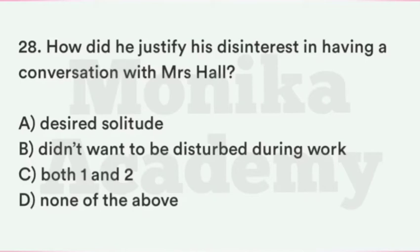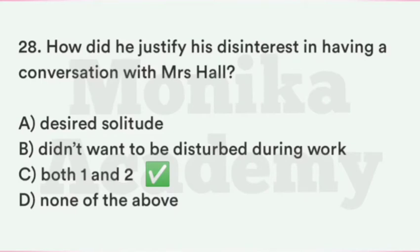Question 28: How did Griffin justify his disinterest in having a conversation with Mrs. Hall? Option A: Desired solitude — उसकी इच्छा एकांतवास में रहने की थी. Option B: Did not want to be disturbed during work — काम के बीच disturb होना पसंद नहीं. Option C: Both 1 and 2. Option D: None of the above. The correct answer is C, Both 1 and 2 — Griffin ने कहा वो solitude चाहता है और काम के बीच disturb नहीं होना चाहता.